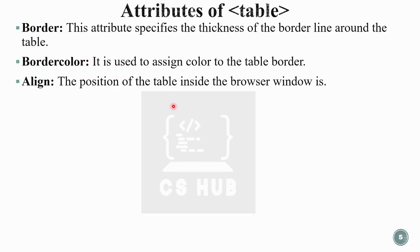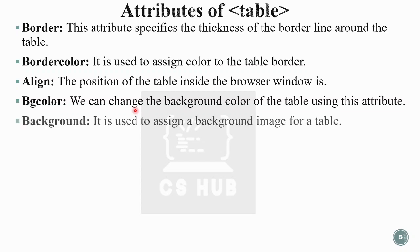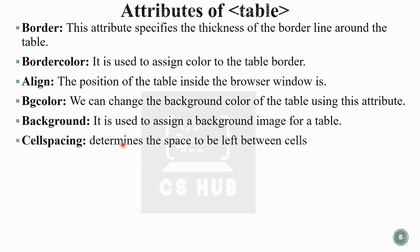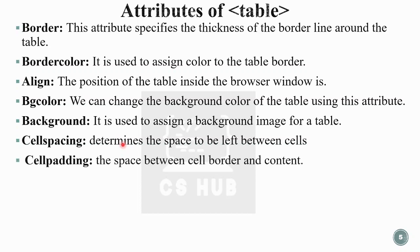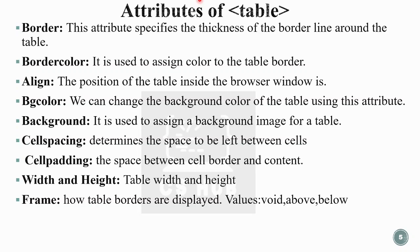Next is alignment — the position of the table inside the browser window. Then we can set the background color of the table, and also set an image as the table background. Cell spacing determines the space to be left between cells. Cell padding is the space between the cell border and the content. We can also specify the table width and height.